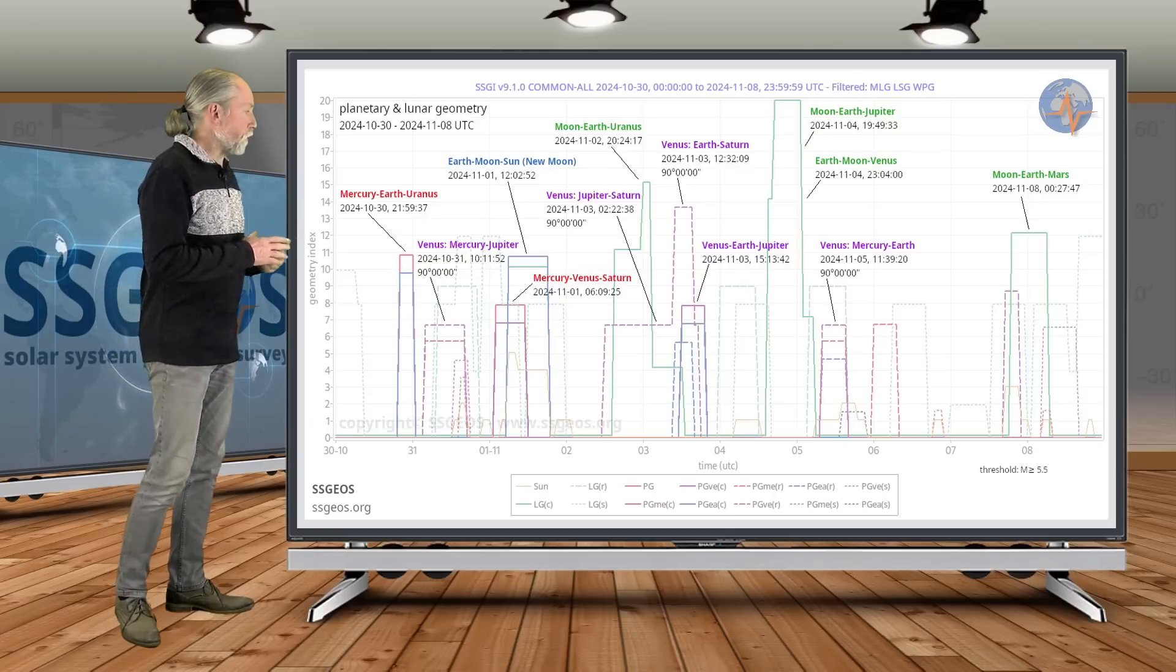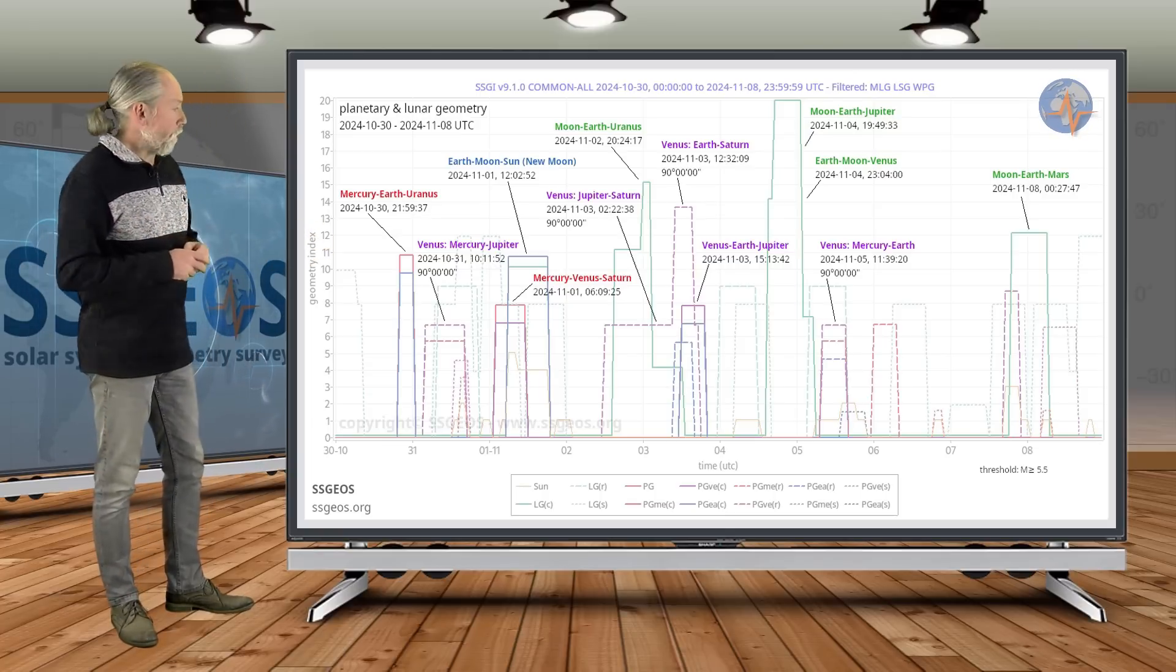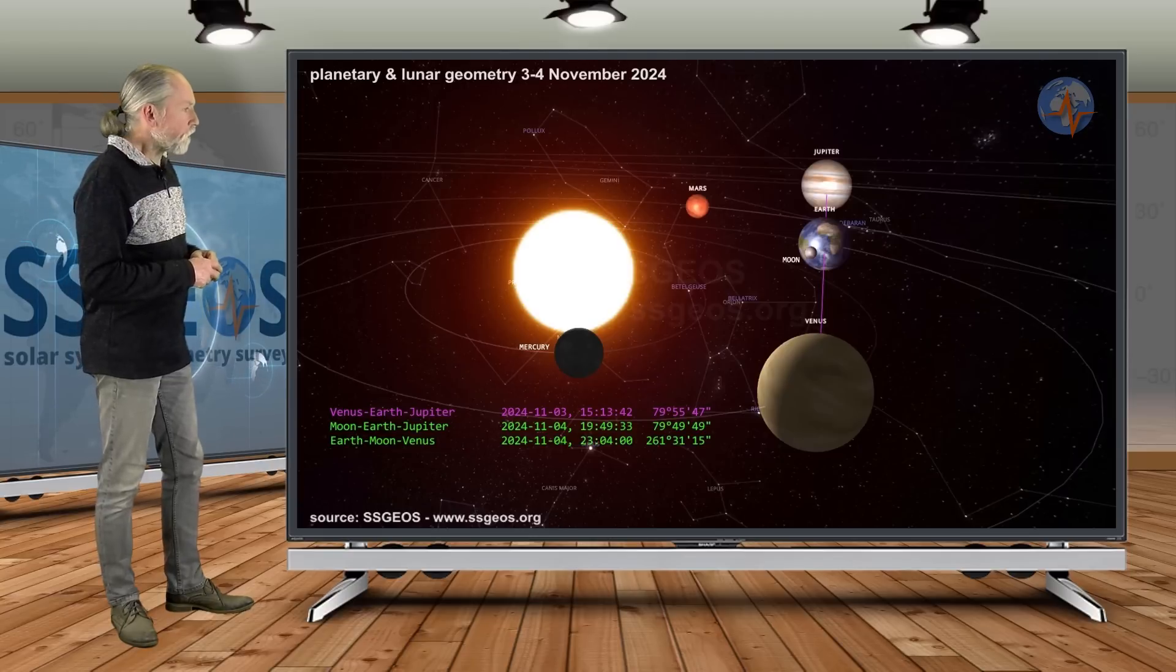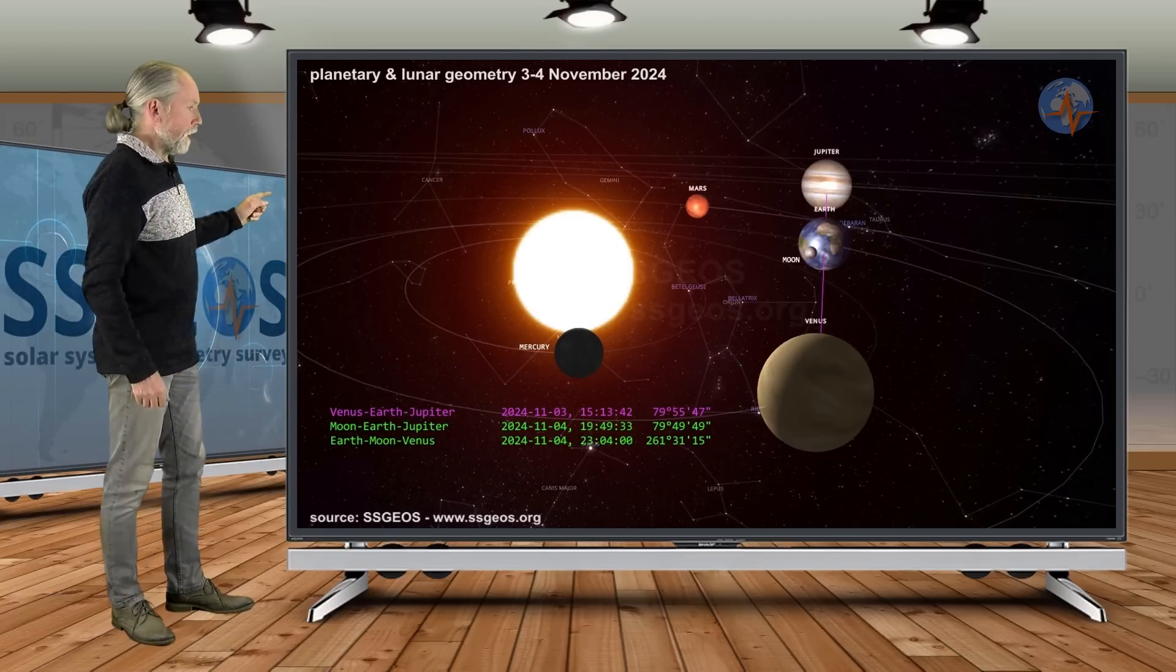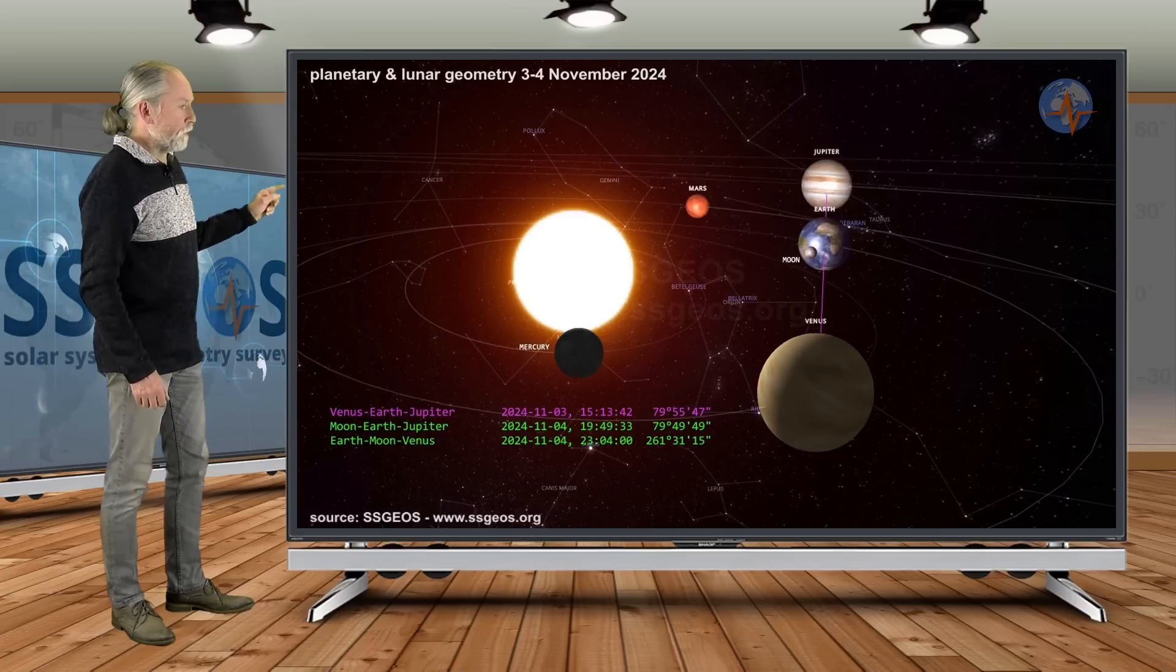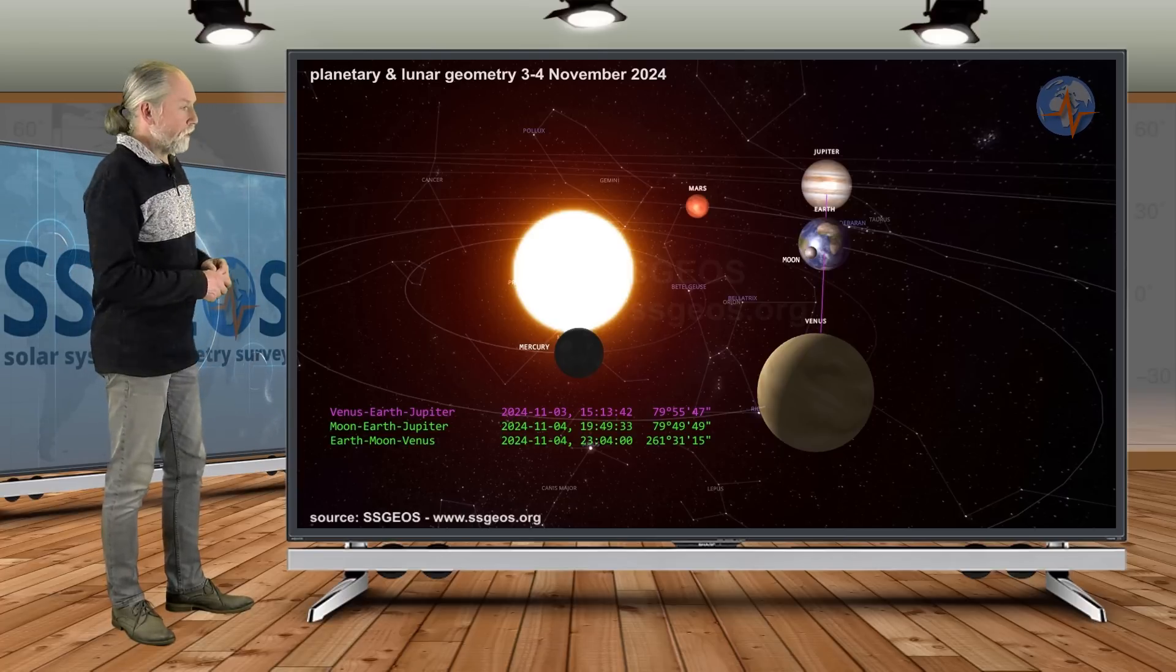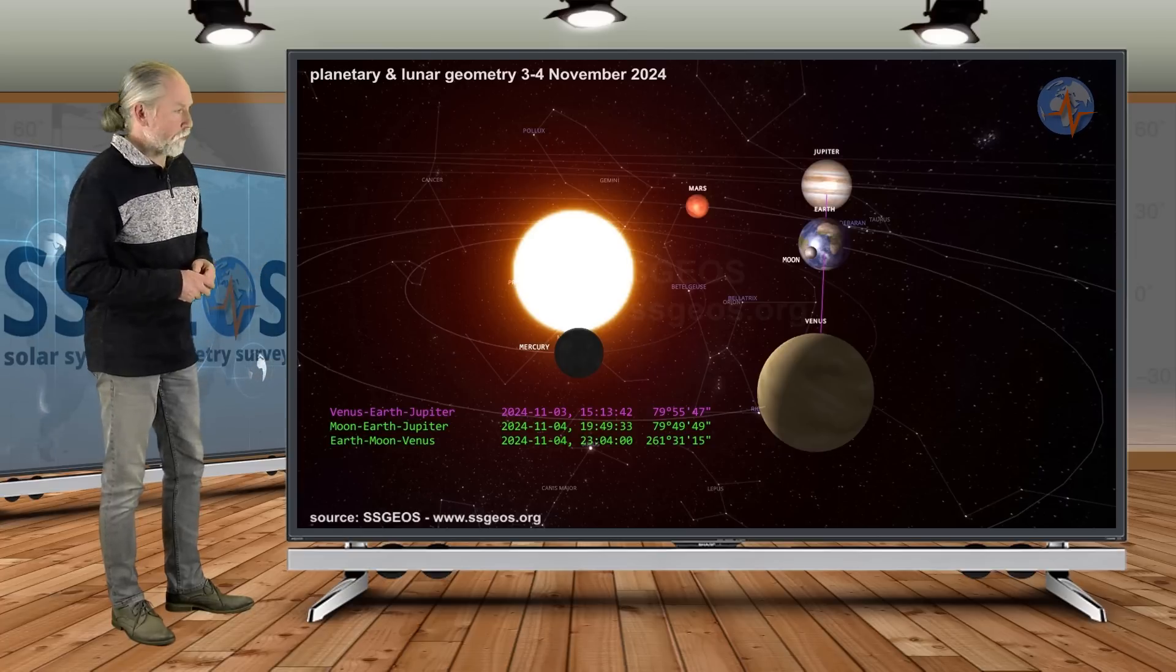With the planetary conjunctions, the new moon, and especially the right angle geometry with Venus around the 3rd converging with Venus, Earth, Jupiter in a conjunction. We see that actually in the solar system here on the 3rd and 4th, the critical geometry. Earth between Venus and Jupiter. We see the moon going counterclockwise, moving to that purple line, a conjunction with Venus and an opposition with Jupiter.